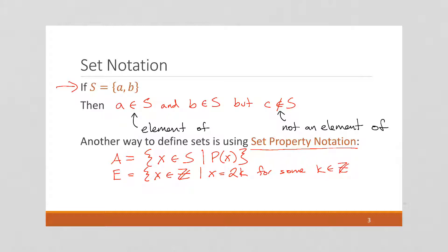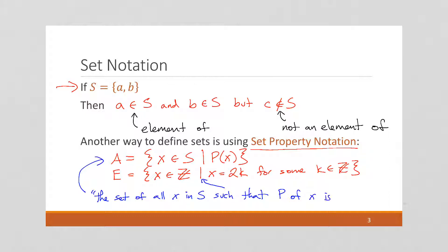For example, the set of all even numbers is the set of all integers X such that X equals 2K for some integer K. This is read as: the set of all X in S such that P of X is true. The second line would be read: the set of all integers X such that X is equal to 2K for some integer K.